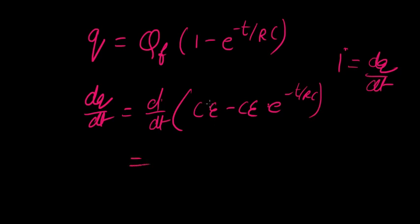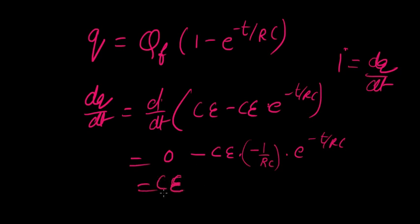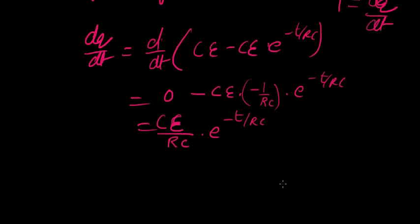So what do we get here? Differential of this is 0. And here, minus ce times minus 1 over rc times e power minus t over rc. So minus minus cancel each other.